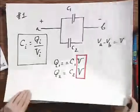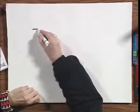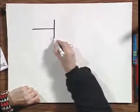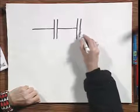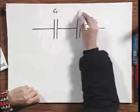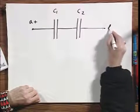That's called parallel. If now we go to series, here we have two capacitors in series, C1, C2, point A, positive potential, point B.